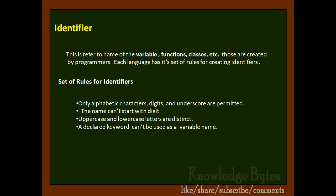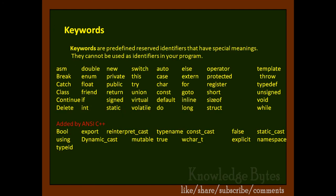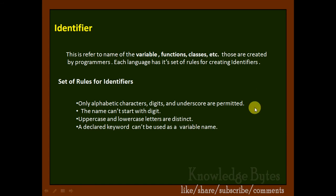The next rule: uppercase and lowercase letters are distinct. Let's say I have one variable int abc in lowercase and another variable int ABC in uppercase. Then both are different, not the same. That means uppercase and lowercase letters are distinct in naming. Last rule: a declared keyword cannot be used as a variable name. As we discussed in the previous slide, keywords are predefined reserved identifiers. Because they are predefined, they have specific fixed meaning for C++.